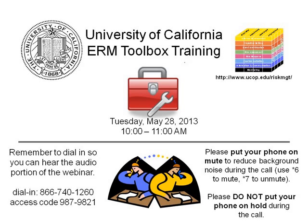A couple of housekeeping notes before we get started today. If you've dialed in by phone but haven't logged in by web and you'd like to see the slides that will be shown today, please point your web browser to vetitalk.com. In the box where it says Participate, Join a Meeting, enter the same access code that you used to join the call: 987-9821.